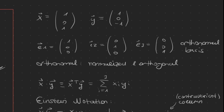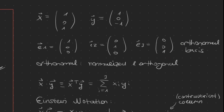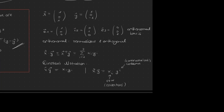A vector represented in such a way is always associated with a basis. A very common basis is the Euclidean orthonormal basis, defined by those three eigenvectors. You can naturally extend it to arbitrary dimensions. Orthonormal means that those eigenvectors are normalized and orthogonal to each other. When we compute the scalar product we denote it as x times y.